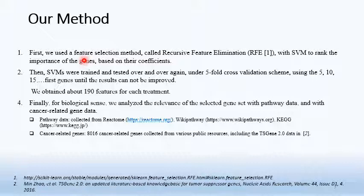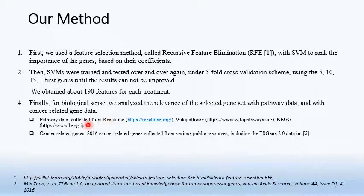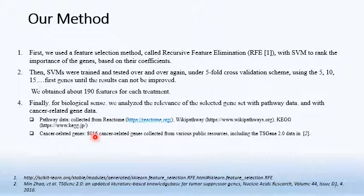Finally, for biological sense, we analyze the relevance of the selected gene set with pathway data and cancer-related gene data. We collect pathways from Reactome and WikiPathways, and for cancer-related gene data we collect about 1,000 cancer-related genes from various public resources including the TF Gene version 2 database.